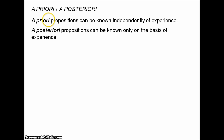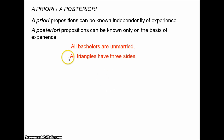A priori truths include propositions such as 'all bachelors are unmarried' and 'all triangles have three sides.' Because 'bachelor' is defined as 'unmarried man,' it's clear we don't need to consult the external world or our experience to see that all bachelors are unmarried. As long as we understand the concept of a triangle, it's clear that all triangles have three sides. A priori propositions also include mathematical truths such as 2 plus 2 equals 4, or logical truths such as the law of non-contradiction.